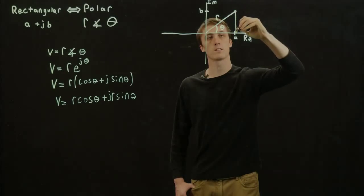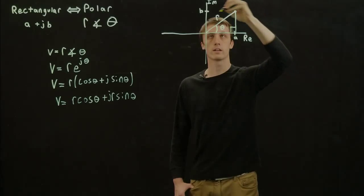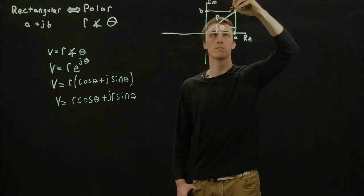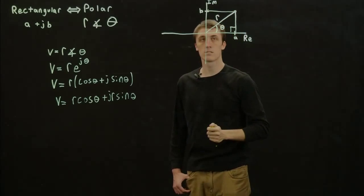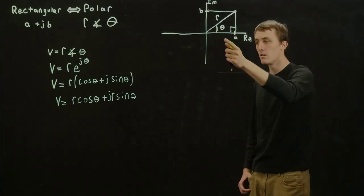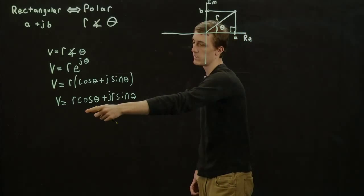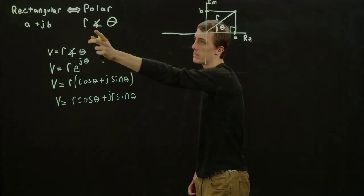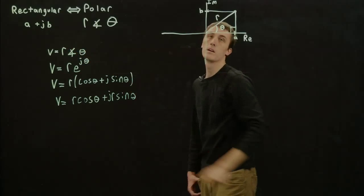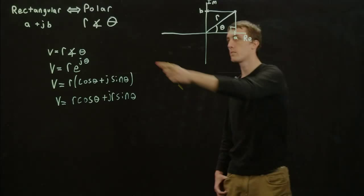We can draw some lines connecting like a right triangle. And using trigonometry, we can derive the equations to convert from rectangular to polar and polar to rectangular. And I'll quickly do that just to show you why it makes sense.